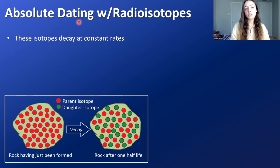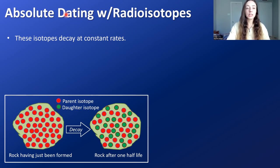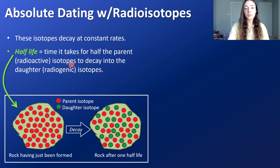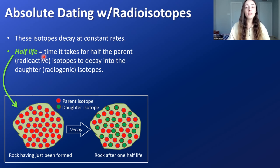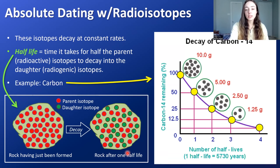This technique is called absolute dating, also known as isotopic or radiometric dating. Because isotopes decay at a constant rate — called a half-life — we can use that rate to calculate how many years have passed since a rock formed. A half-life is the amount of time it takes for half of the parent isotope to decay into the stable daughter product. We can look at this graphically for carbon.